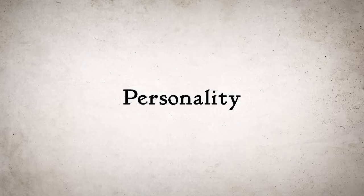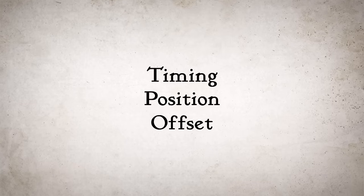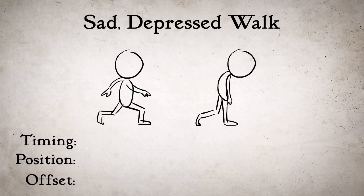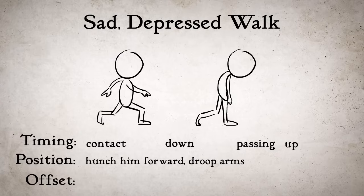Personality can be added to a walk cycle by adjusting a few factors. These factors include timing, position, and offset. To give our character a sad, depressed walk, let's hunch him forward, make his contact pose and down pose take much longer, and droop his arms down low. His up and down poses should be close in height, to take away the bounce.